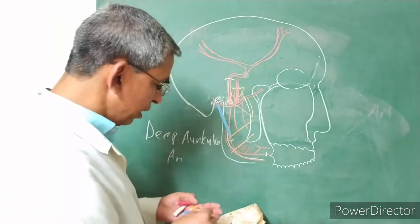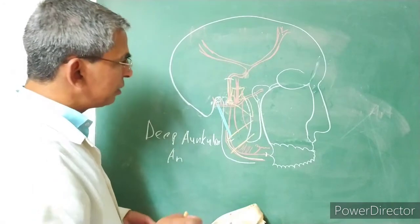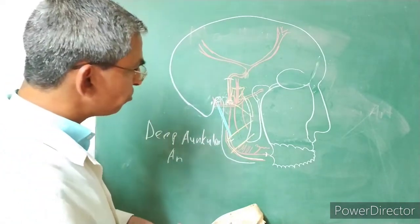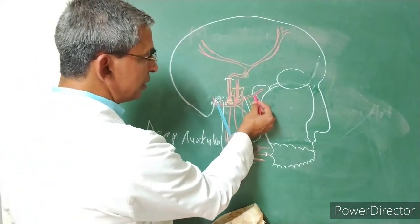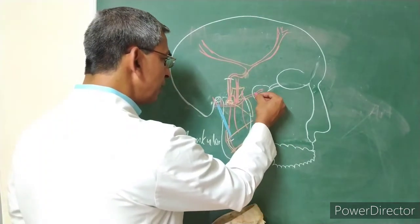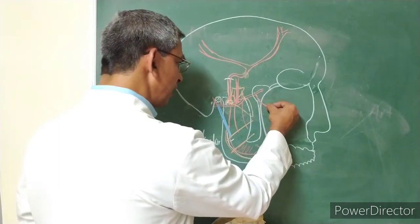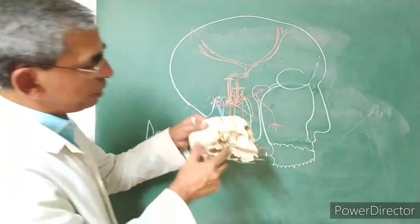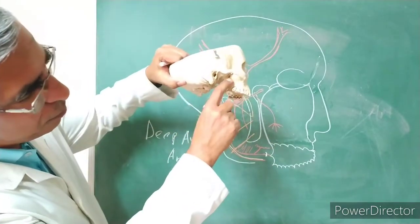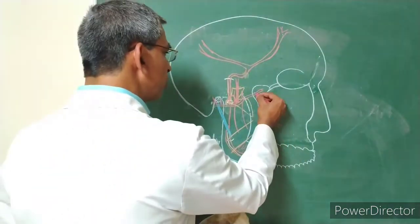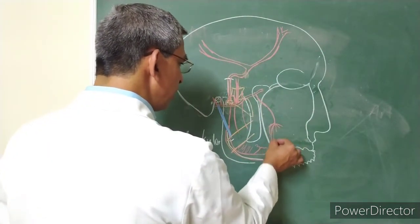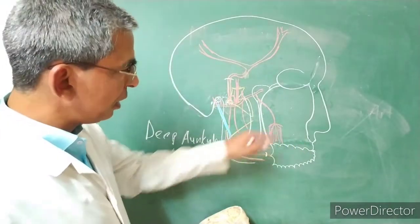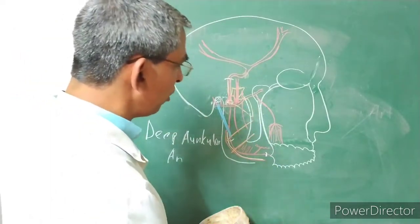The third part of the maxillary artery gives six branches. The first, given off as the artery enters the pterygomaxillary fissure, is the posterior superior alveolar artery. This artery enters foramina on the posterior surface of the maxilla and supplies the pulp spaces of the upper molar and premolar teeth of the upper alveolar arch.